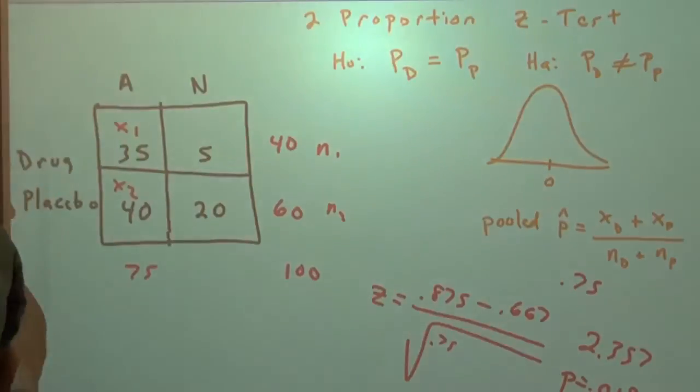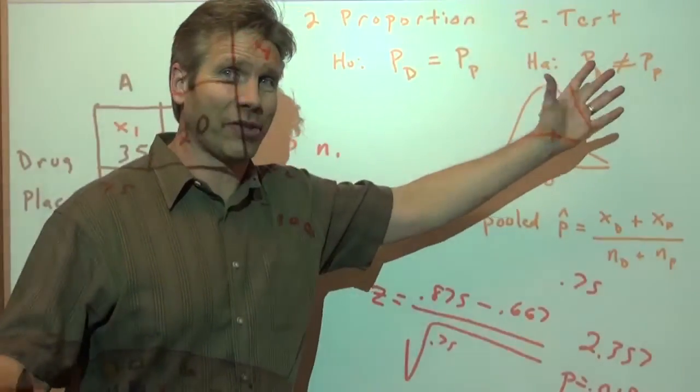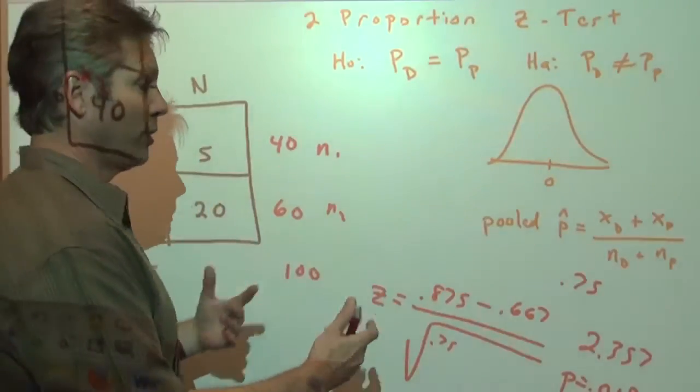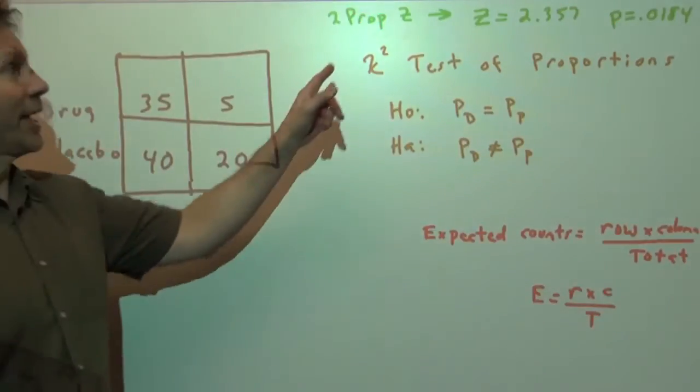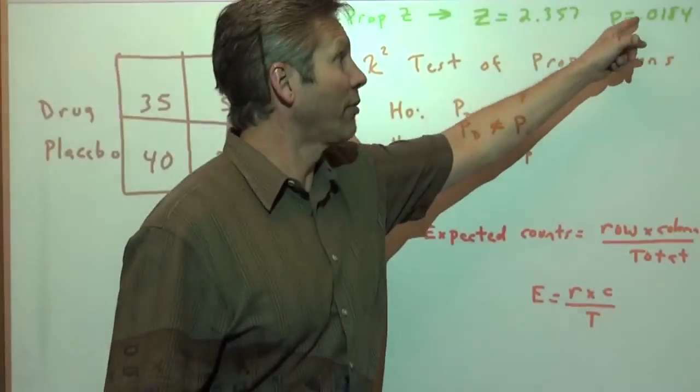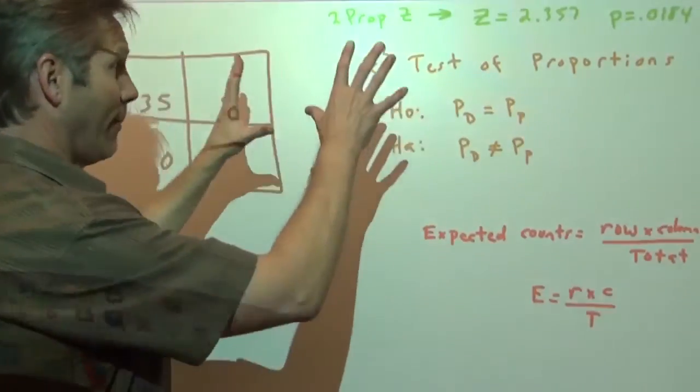So we would reject the null. The evidence would suggest that there is a difference in the proportion of narcoleptics who are staying awake. Now we want to go to a chi-squared test. I'm going to remind us of what the results were for the two-proportion z-test.